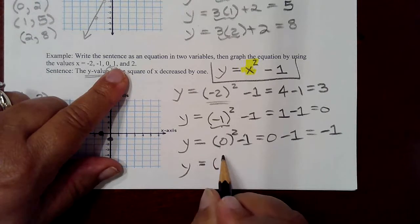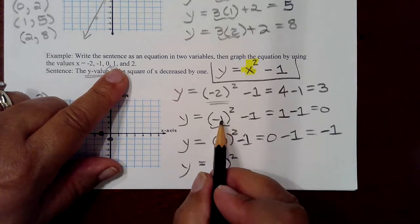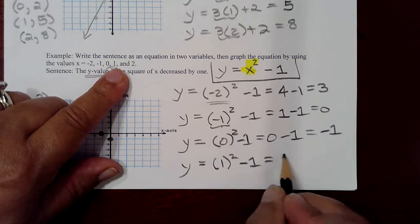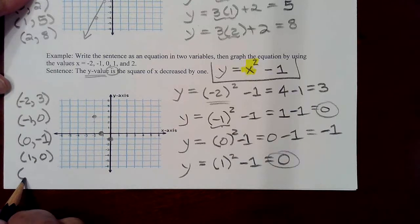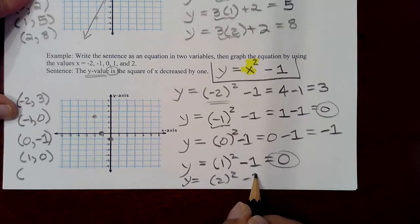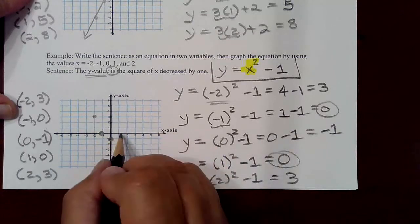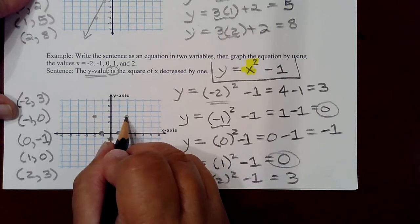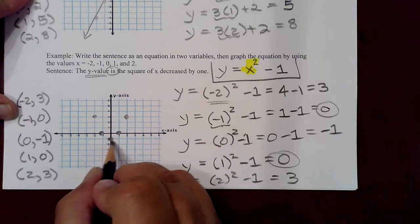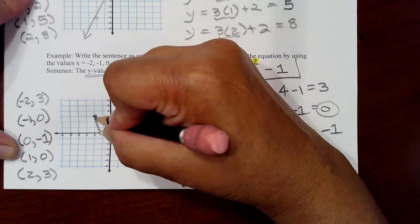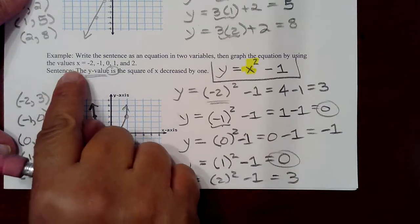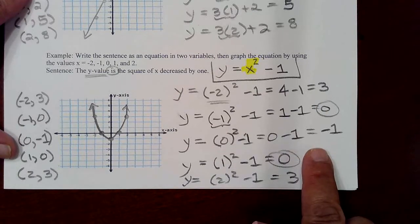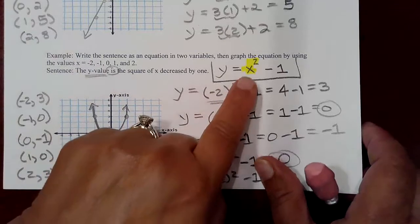Then plugging in positive 1: you'll get the same answer as negative 1 because whether you square negative 1 or positive 1 it's still 1, and when you subtract 1 you get 0. So when plugging in 1 we get 0 — that's (1, 0). Same thing happens with 2: you'll get the same answer as negative 2, which was 3. So when plugging in 2, you get 3 — that's (2, 3). These are mirror images, and this is called the vertex. Connect these in a parabolic manner.